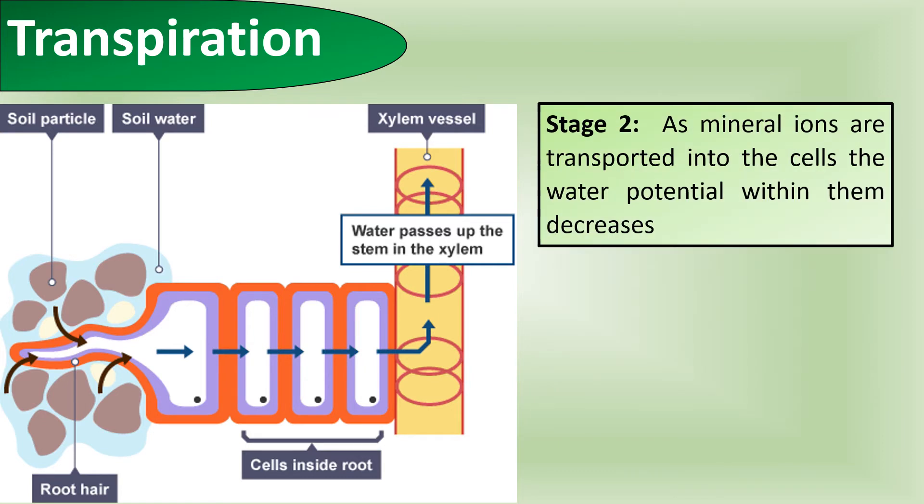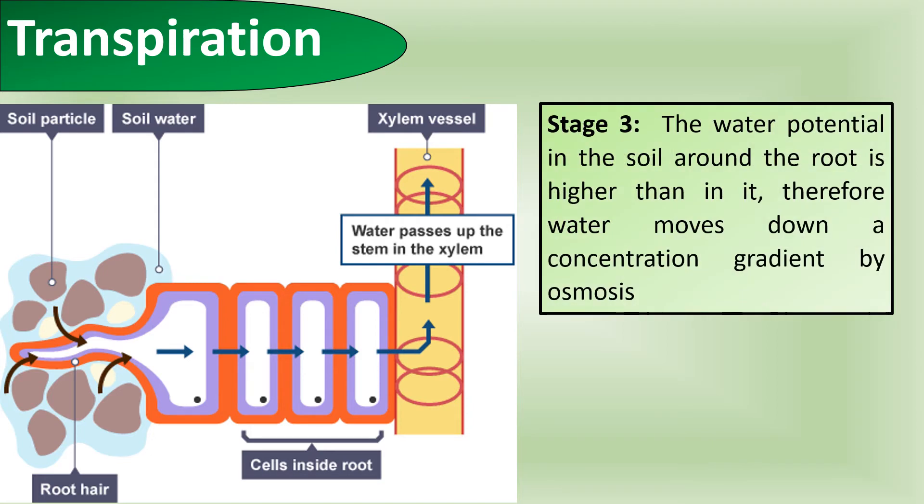As mineral ions are transported into the cell, the water potential within them decreases. It's important to keep continually talking about water potential as we talk about transpiration. The water potential in the soil around the root is higher than in it, therefore the water moves down a concentration gradient by osmosis.